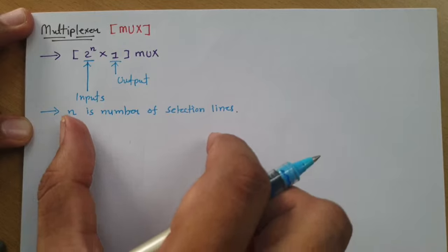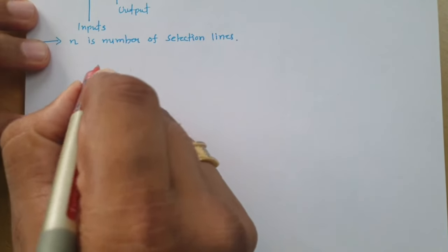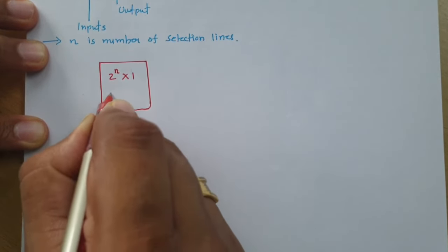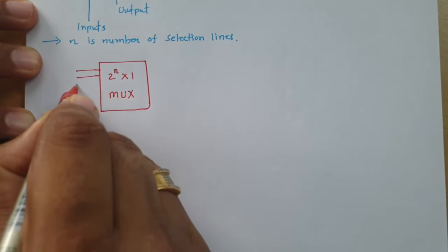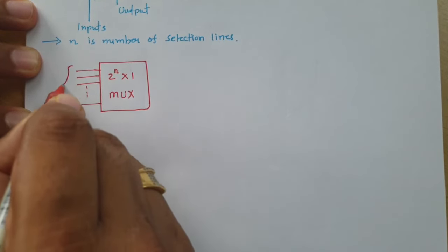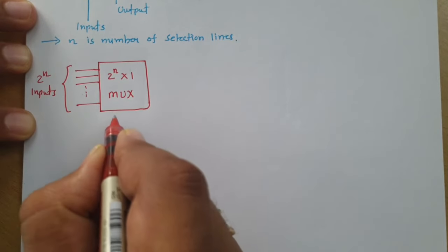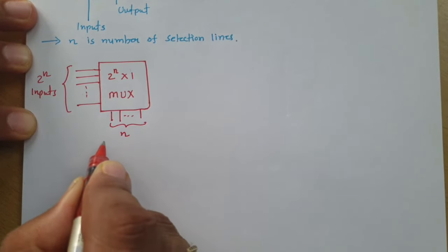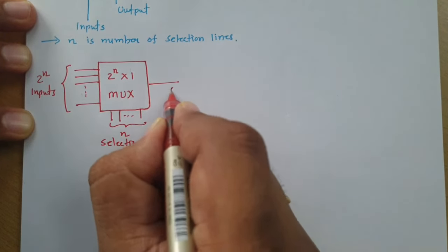Let us understand this by a block diagram so it will be more clear. In a 2 to the power n cross 1 MUX, we have a total of 2 to the power n number of inputs, n number of selection lines, and one output.